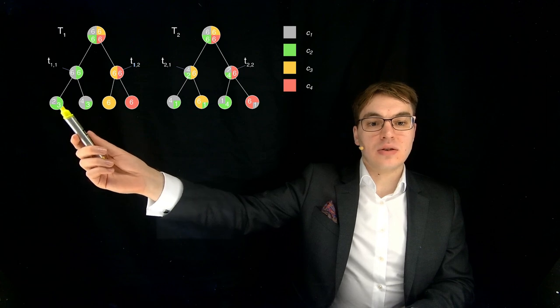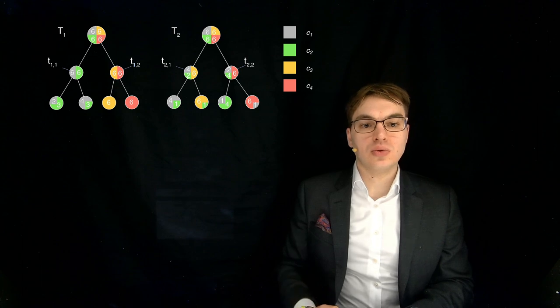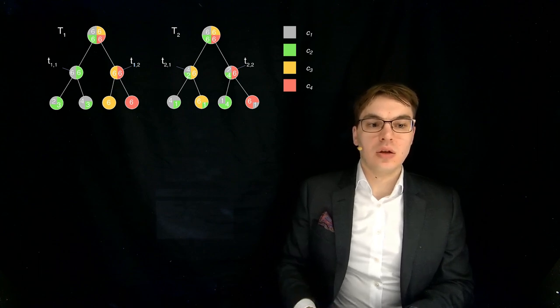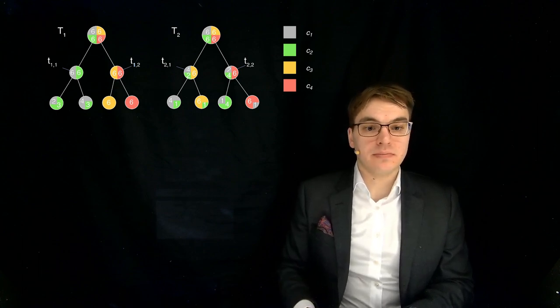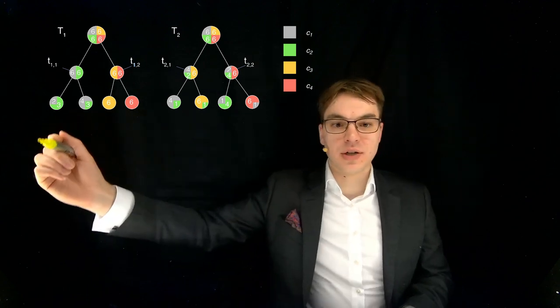And this also means that all those values that are marked here as the two gray values, C1, would be marked wrongly. So this adds up to our misclassification rate.